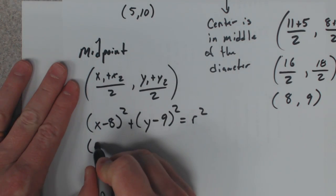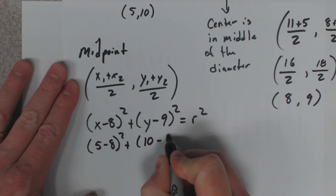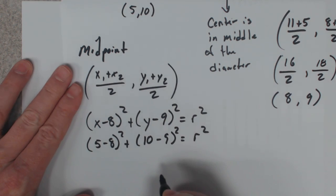So if I plug my 5 in here, plug my 10 in here, I can find out what r² is.